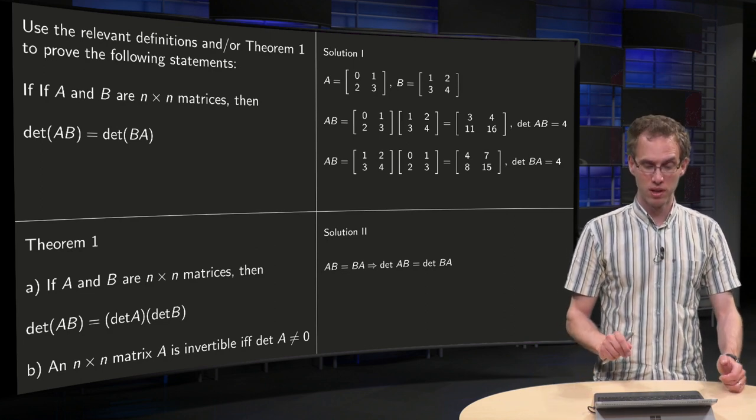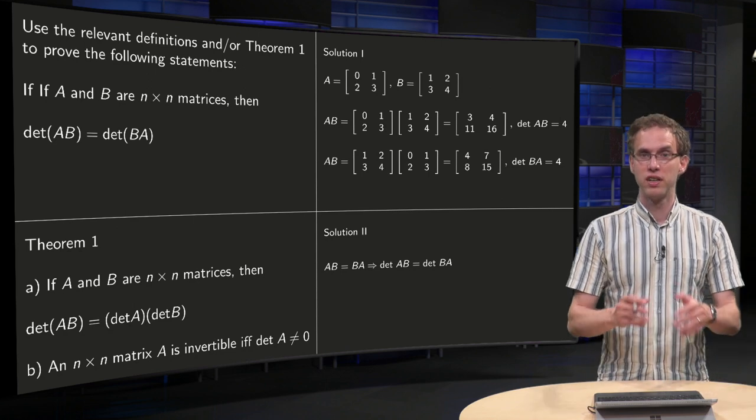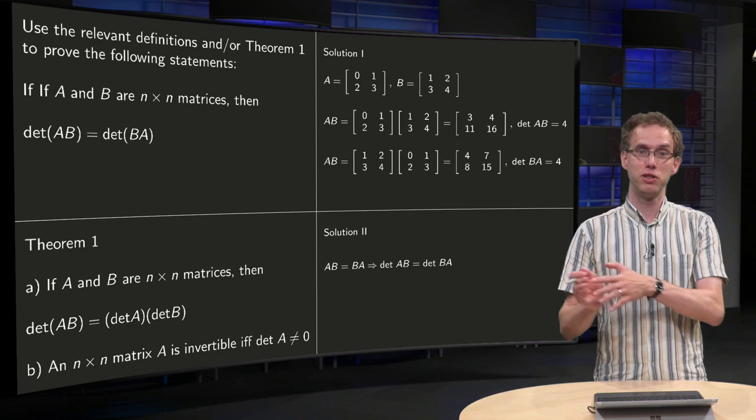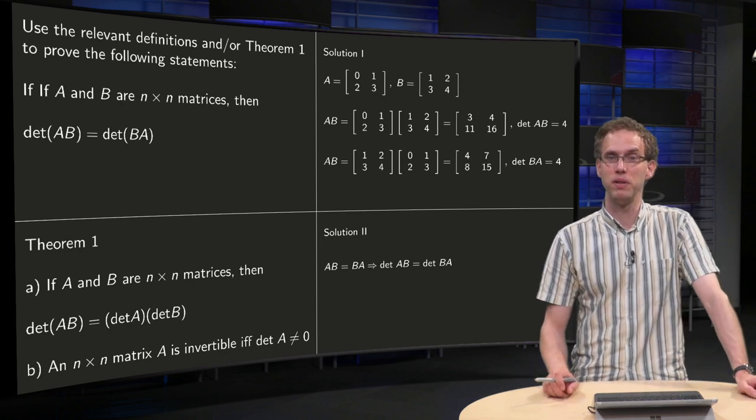Second solution. Why don't you just do it like this? We know AB equals BA. So the det of AB is also equal to the det of BA. Done.